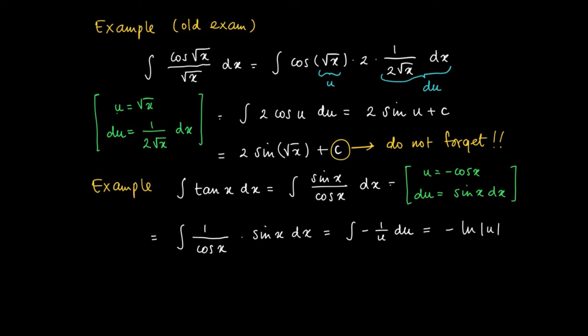We're not sure whether or not u is positive, so we use the absolute value sign. And we obtain, by substituting back u equals the cosine of x, we get minus the natural logarithm of the cosine of x plus c.